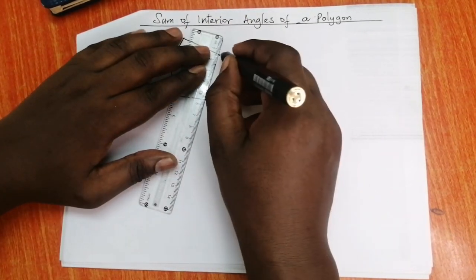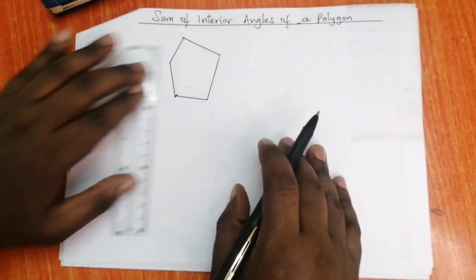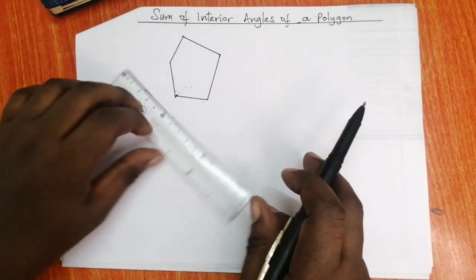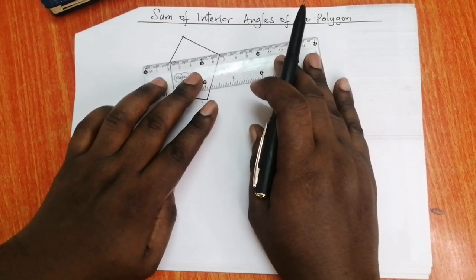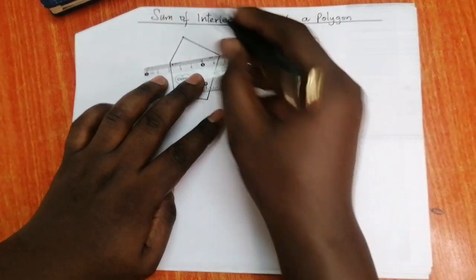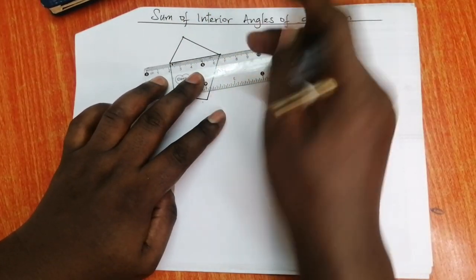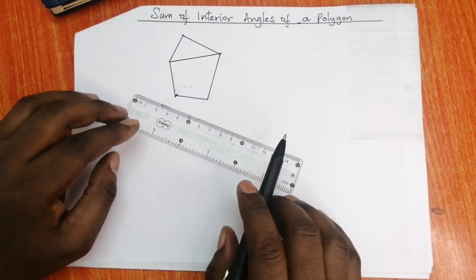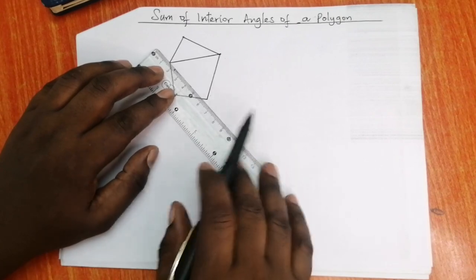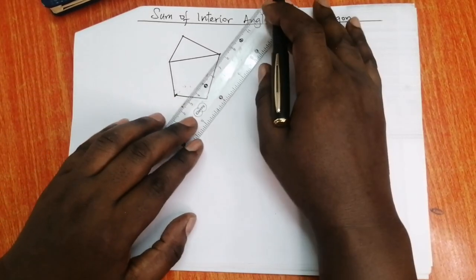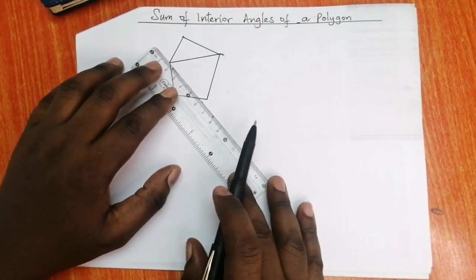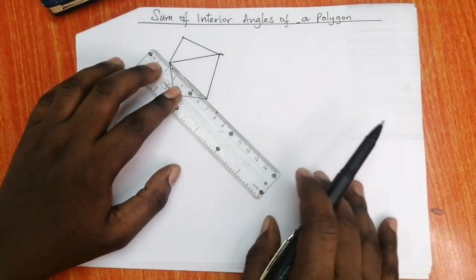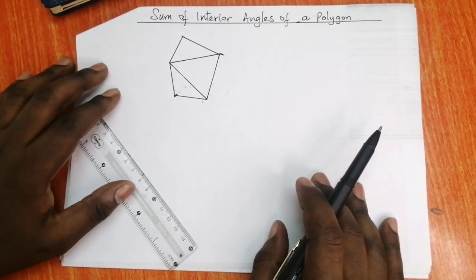We have a polygon here with five sides. If we divide this polygon into triangles using the vertices, please make sure that the triangles do not overlap. We can draw the triangles like this, and it can work. So we have those triangles.